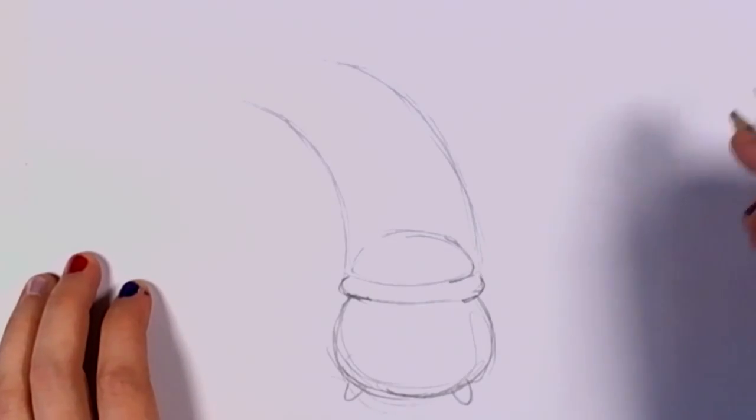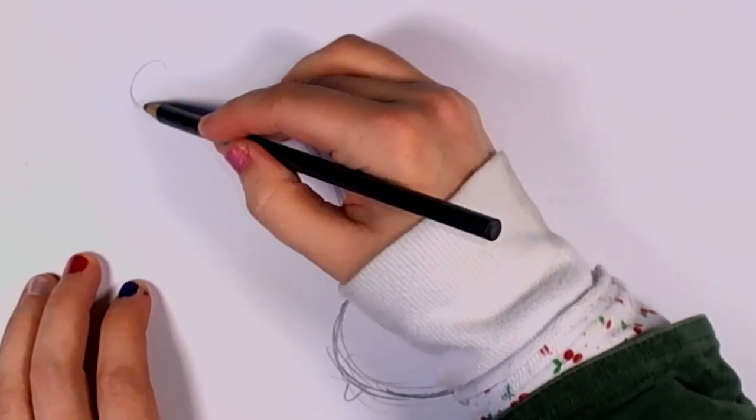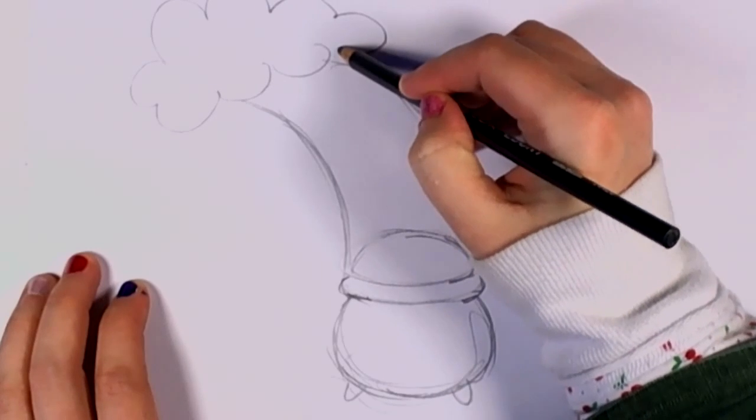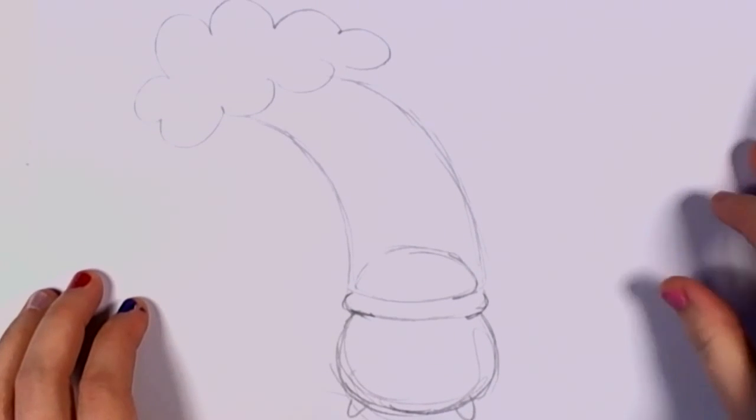Next I'm going to draw a cloud to attach to the other end of the rainbow. And I'm sorry, that's a little bit too close. I'm going to zoom out a bit there.